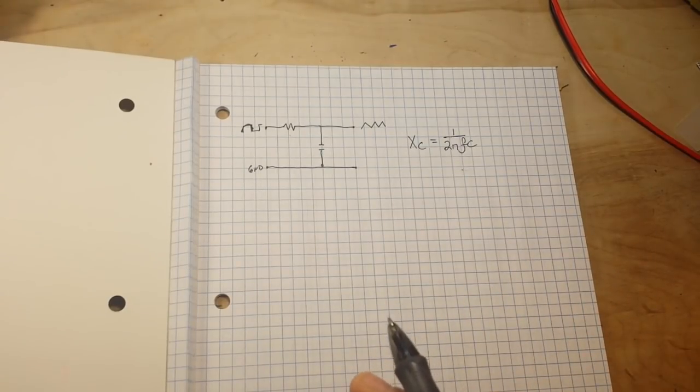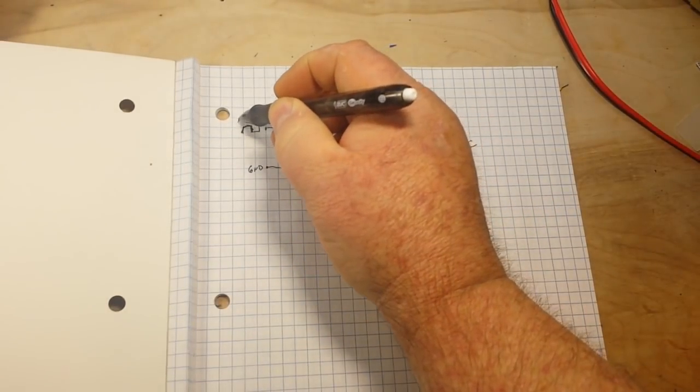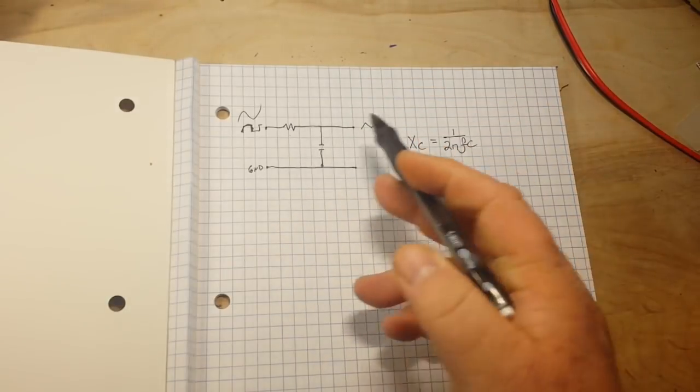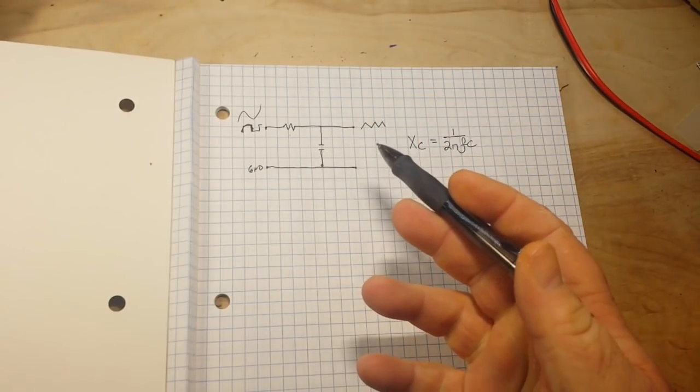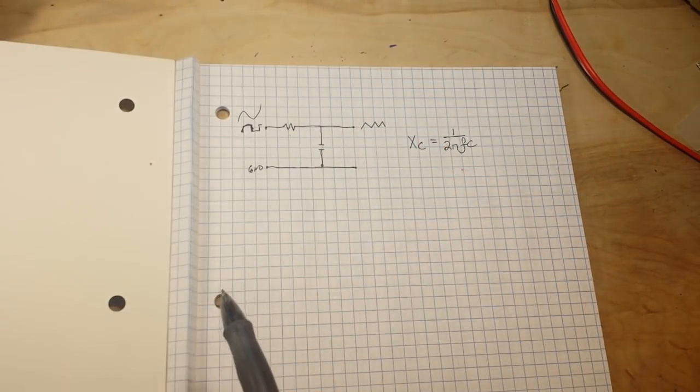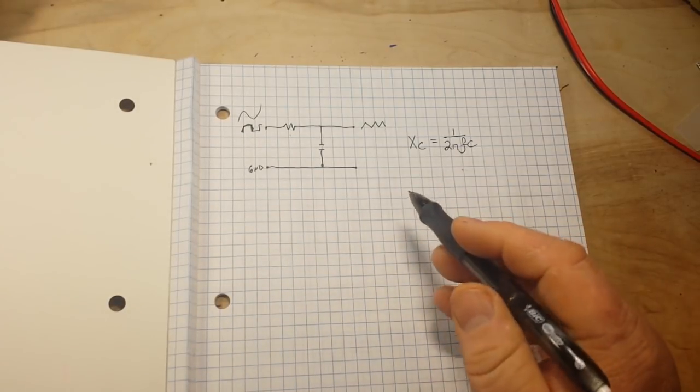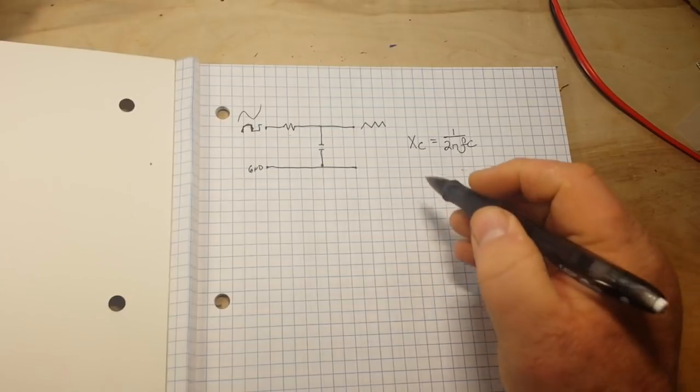If our input is a sine wave, then this becomes a simple low-pass filter. But if our input is something else like the square wave, then it depends on the RC time constant.